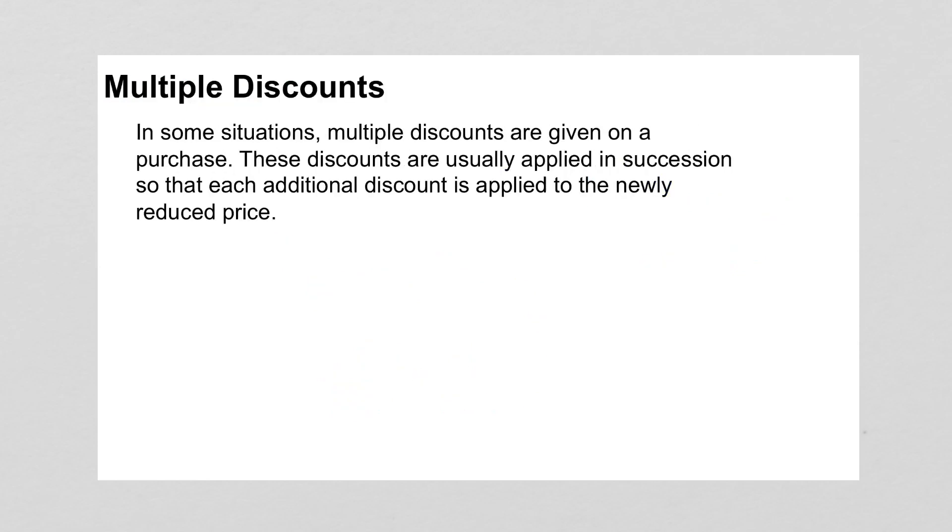In some situations, there are multiple discounts. These discounts are usually applied in succession, so that each additional discount is applied to the newly reduced price. When you go to a store and you see that something is 20% off, and then it says we took another 35% off, that does not equate to 55%. You're first taking 20, and then you're taking 35.